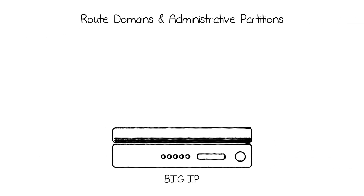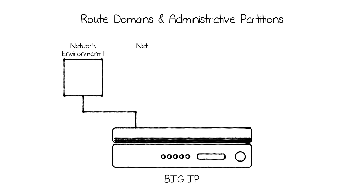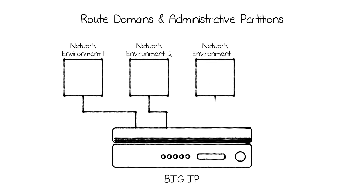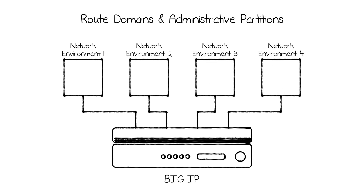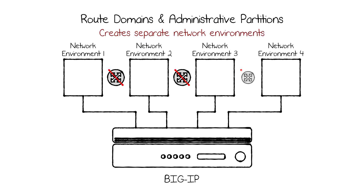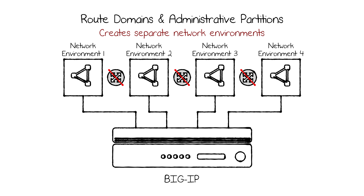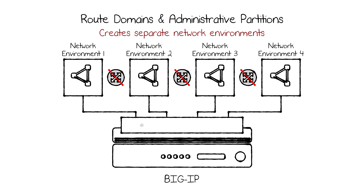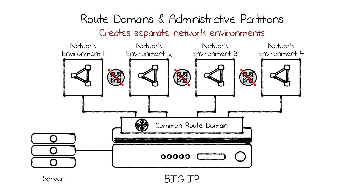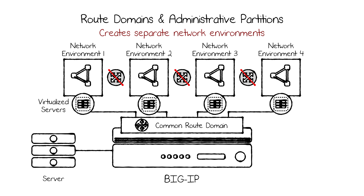First, let's talk about route domains and administrative partitions. Route domains allow you to take your F5 BigIP or Viprion platform and carve it into different network environments. These network environments are completely separate — any network placed in one route domain will by default not be able to connect to networks in any other route domain. But you can create a common route domain for a front-end network and use objects like virtual servers to connect the front-end access network to an entirely segregated multi-tenant network behind.